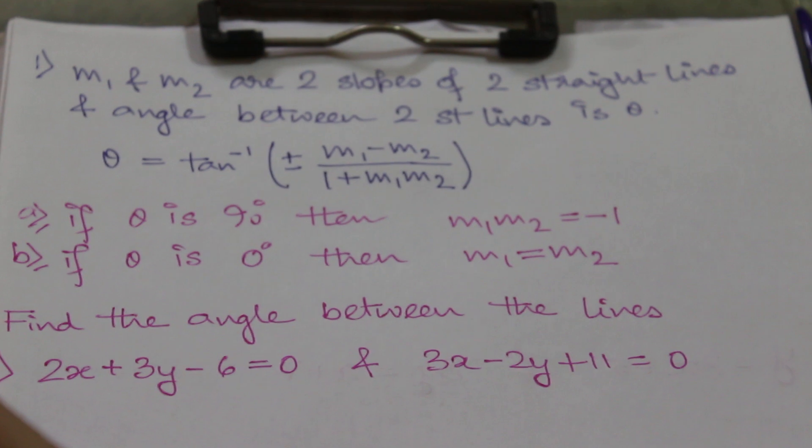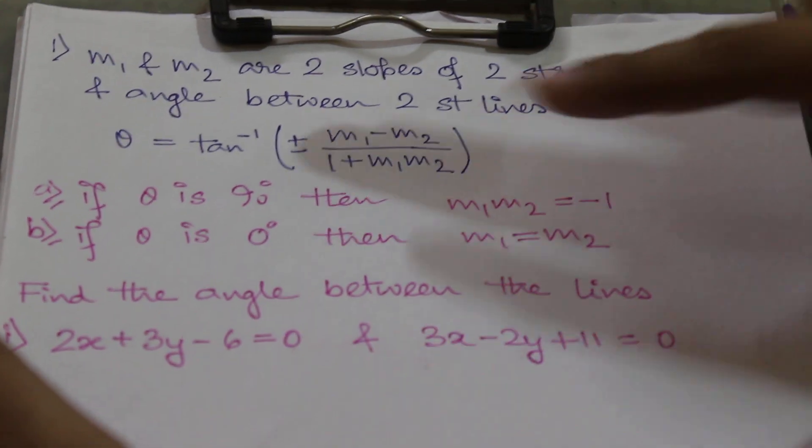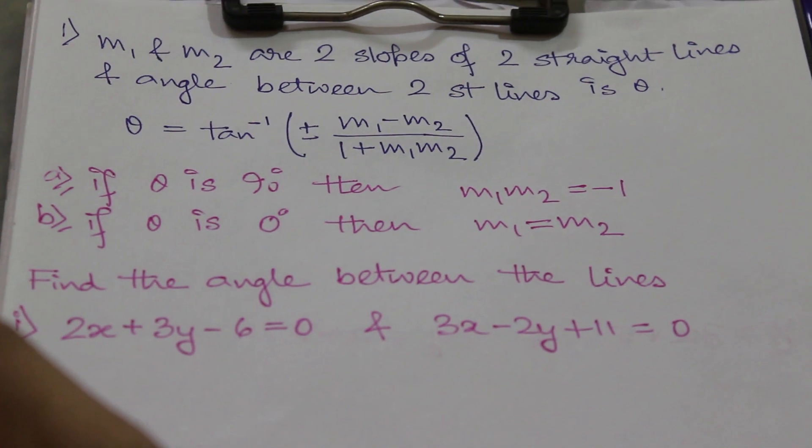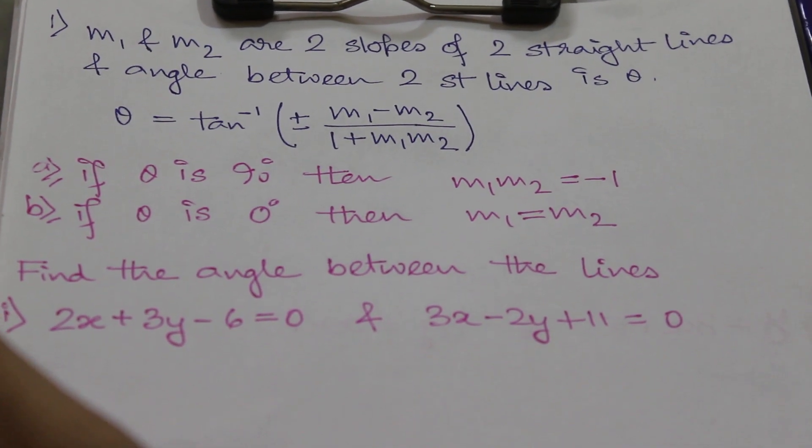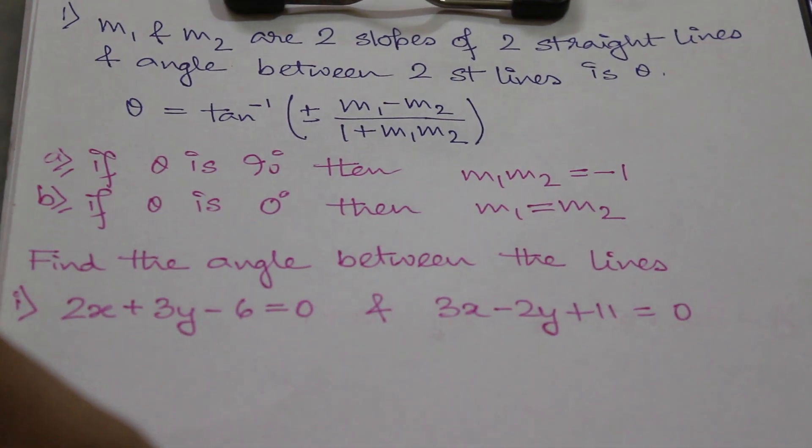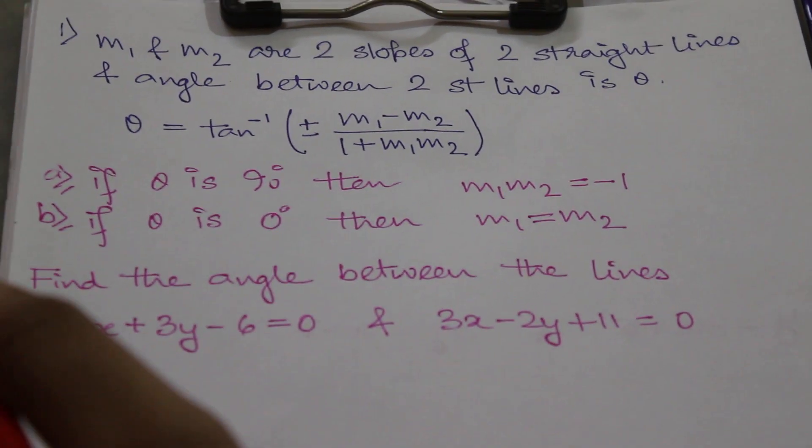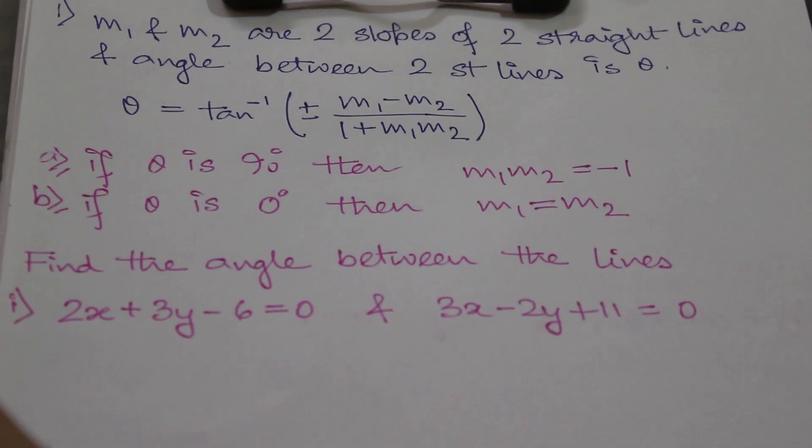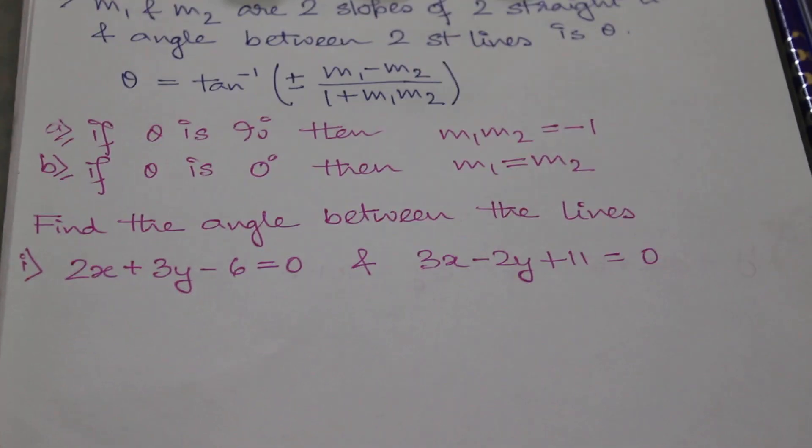Next, there are two shortcuts. If theta is 90 degrees, that means the angle between them is 90 degrees, then m1·m2 = -1. And if theta is 0 degrees, that means they are parallel, then m1 = m2.